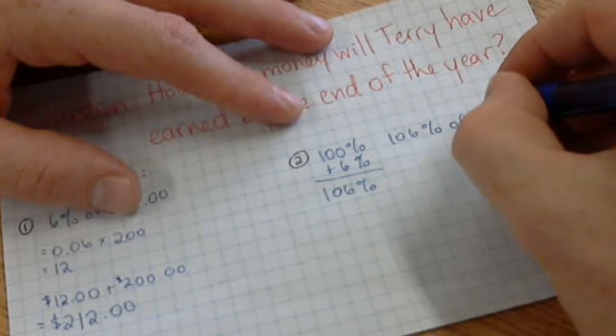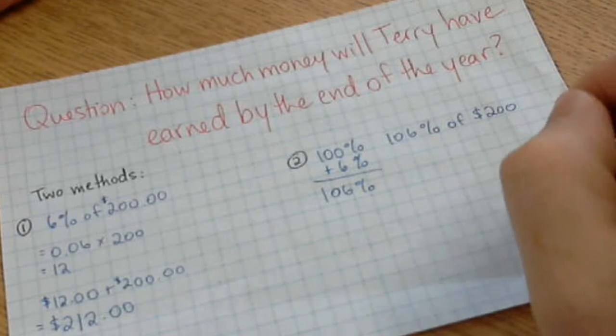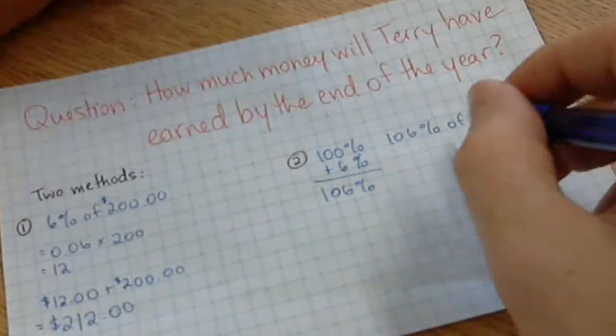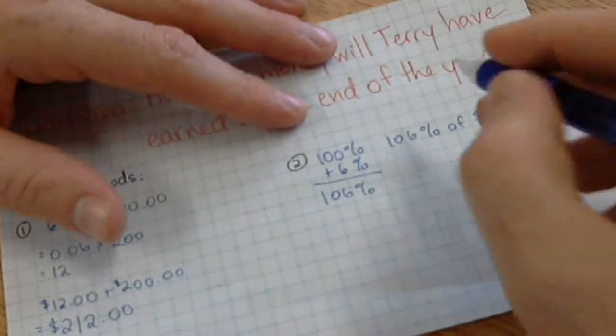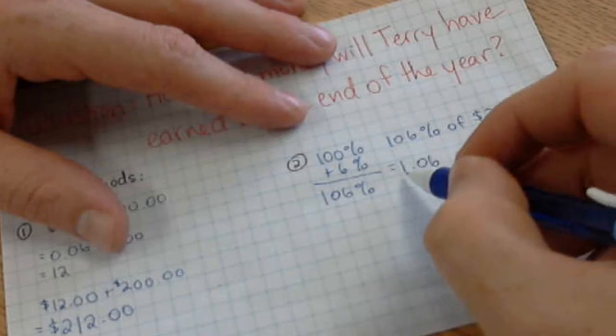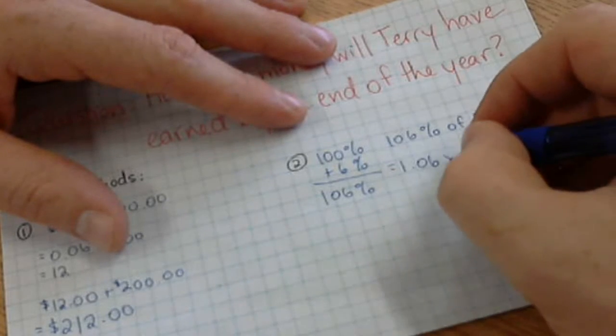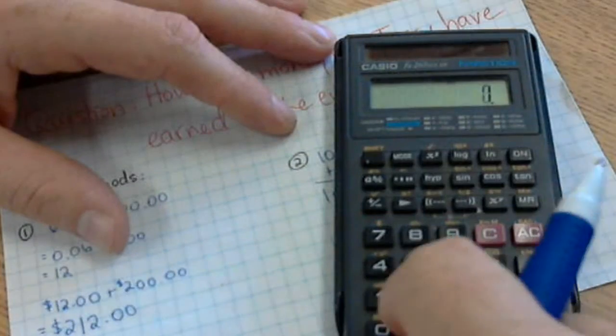We just spent yesterday figuring out percents greater than 100. If I figure out 106% of $200, that's going to tell me right away how much money she earns in interest. What this means as a decimal is 1.06 times 200.